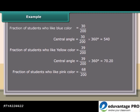Fraction of students who like pink color is equal to 68 upon 200. Central angle is equal to 68 upon 200 times 360 degrees, which is equal to 122.40.